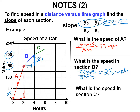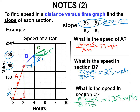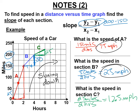In section C, the rise is just one box or 25 miles, and it went there in two hours. So 25 divided by two is 12.5 miles per hour. Notice how the graph has these three lines bending this way — this is what slowing down looks like on these graphs. The car was going 75 mph in section A, then slows to 25 mph, then bends more to 12.5 mph.